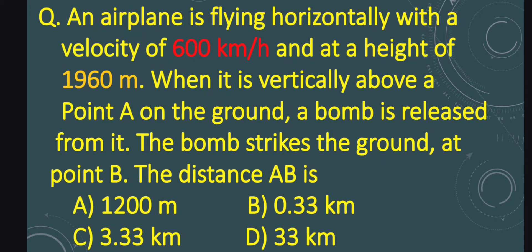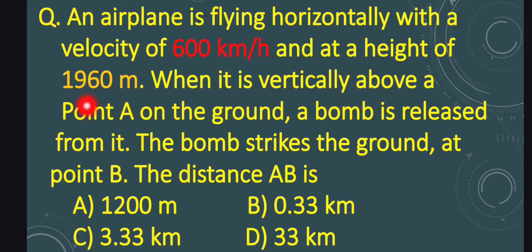The airplane is flying horizontally at 600 km per hour from a height of 1960 meters above the ground. When it is vertically above point A on the ground, a bomb is released from the airplane, which then strikes the ground.